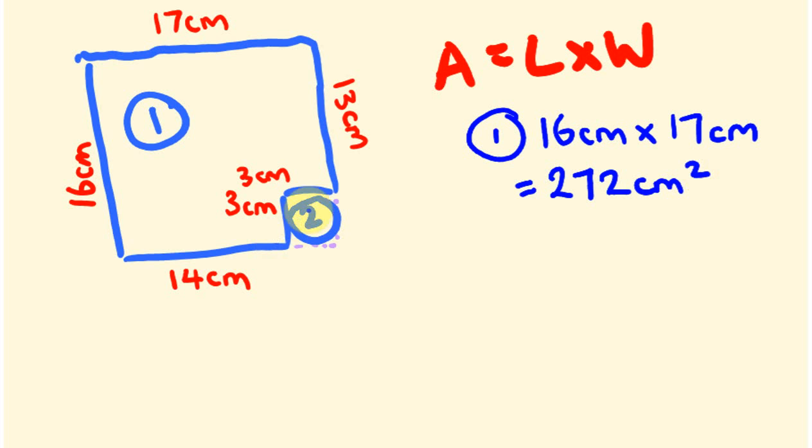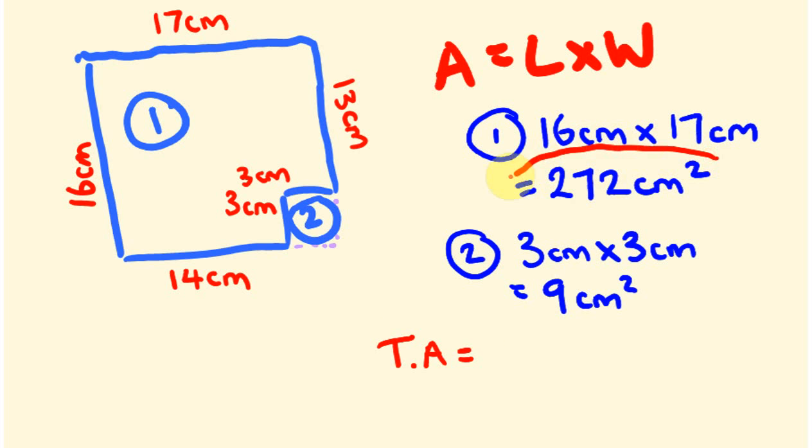What about we work out the area of number 2? The area of part 2 here is 3cm times 3cm. So 3cm times 3cm equals 9cm squared. So now we're almost done. Our total area is the same as this one, take away this one. It's the same as this one, take away this little one here. So we're getting rid of it.